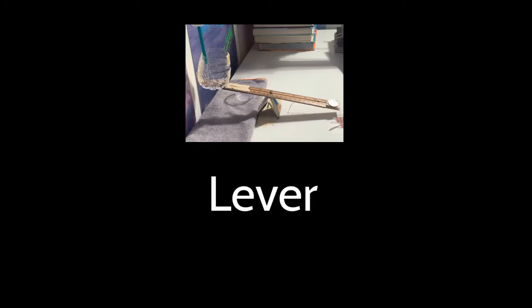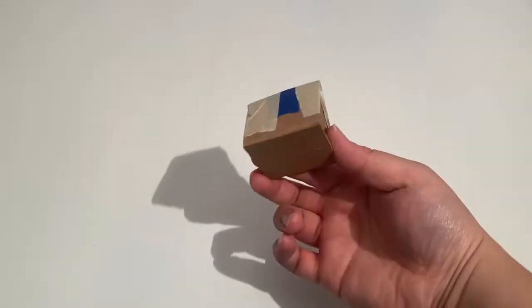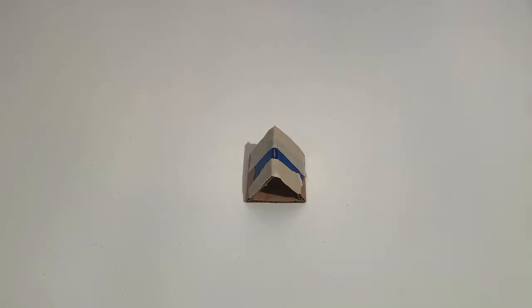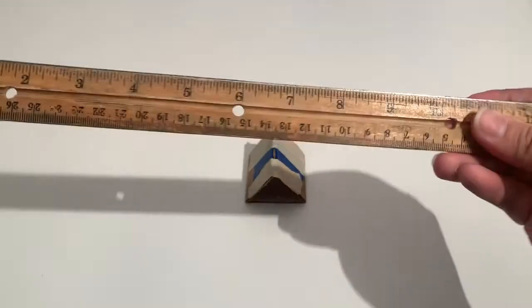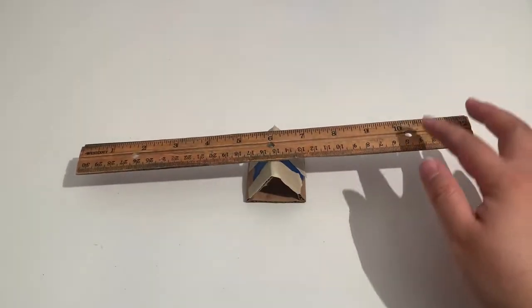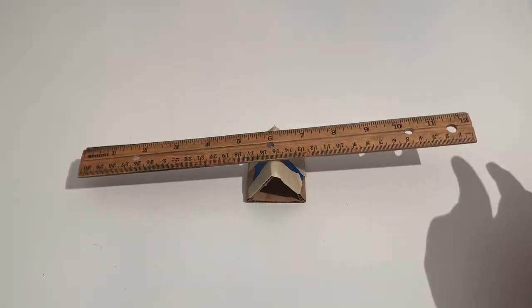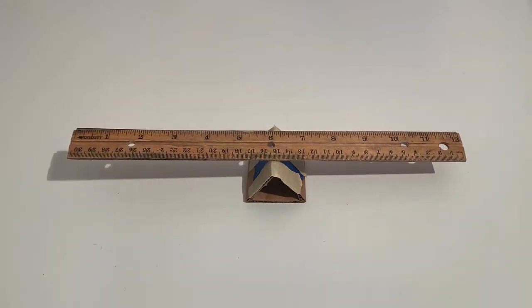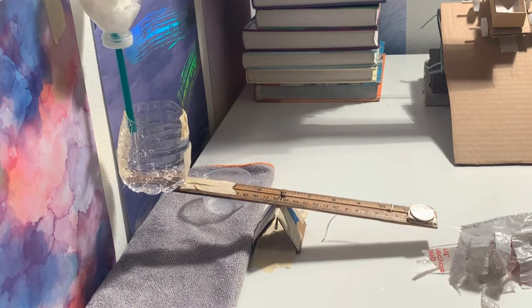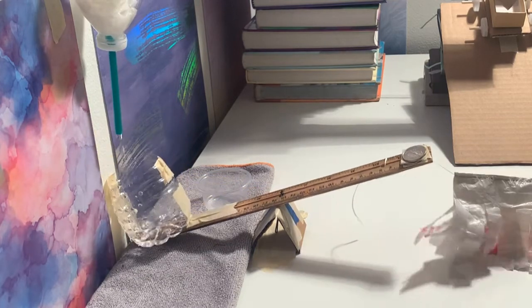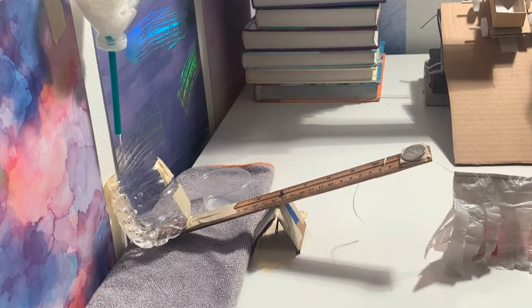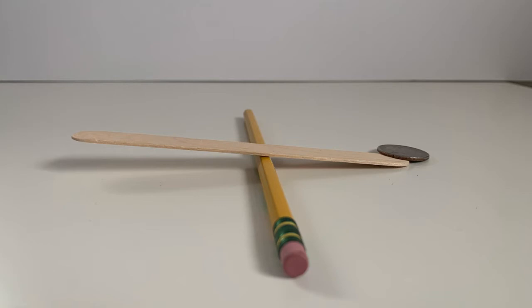A lever is made with a beam and a fulcrum. You can place an object on one end of the beam and apply a force on the opposite end to lift the object. The beam sits on top of the fulcrum and the beam will pivot on the fulcrum to raise the object. Use a flat surface like a ruler, popsicle stick, or piece of cardboard as your beam and place it on top of a pencil, bottle, or fashion a triangle block out of cardboard to use as your fulcrum.